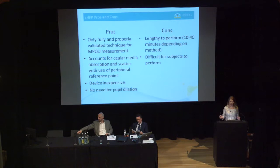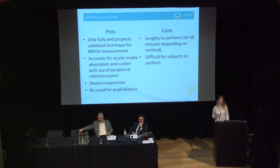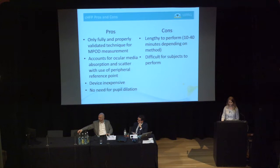Some pros and cons of this technique: it's been fully validated, and we take it as the standard we compare other devices to in our research. It accounts for ocular media absorption and scatter by use of that peripheral reference point, so if your patient has cataracts, you'll still get an accurate measurement. The device is relatively inexpensive compared to optical devices, and there's no need for pupil dilation. Unfortunately, this method can be lengthy — our particular method can take up to 30 minutes — and it's difficult for some subjects, especially children, elderly people, and people with memory deficiencies.